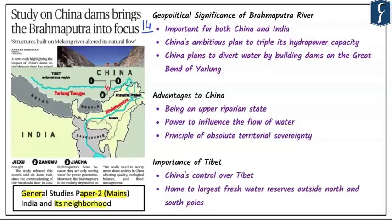There is a huge geopolitical significance of the Brahmaputra as a river. Looking at the map, India is highlighted, and to the north is China. This particular river flows parallel to Nepal, then to Sikkim, then Bhutan, and ultimately enters India through two great bends of Yarlung. It is called the Brahmaputra in India and Yarlung Tsangpo in China.